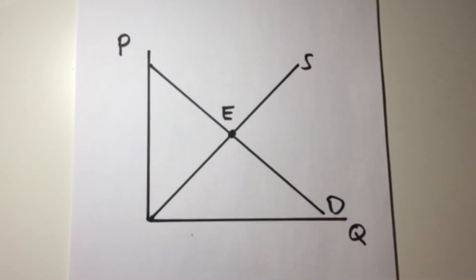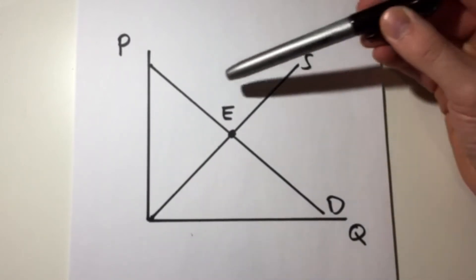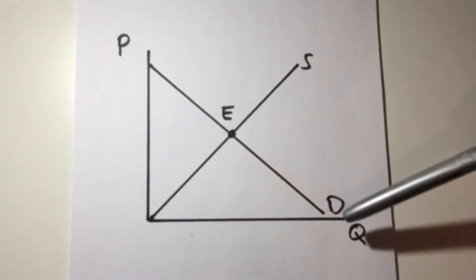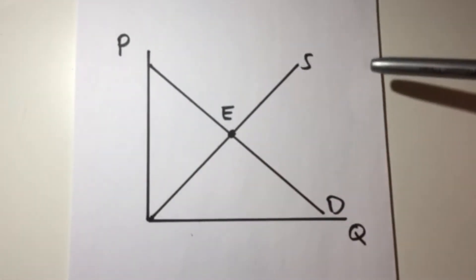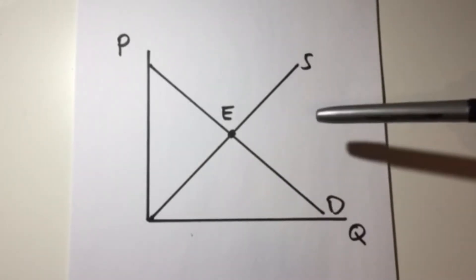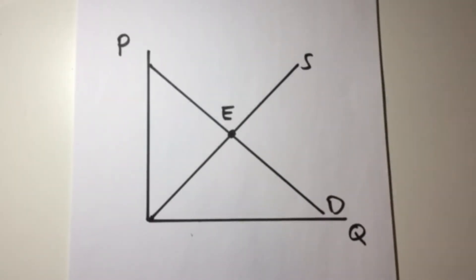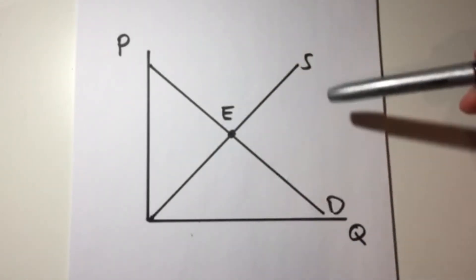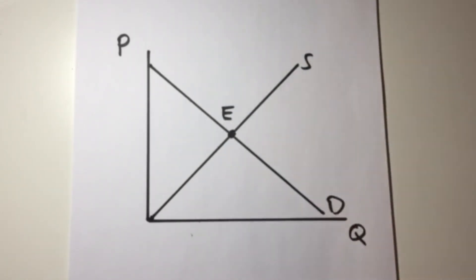Before I get into this video, I'm going to assume that you guys understand the demand curve, supply curve, price and quantity, and have a general understanding of this graph. If not, I'm going to put a link in the description to a video where I explain the basics and general analysis behind this graph and what it all means.